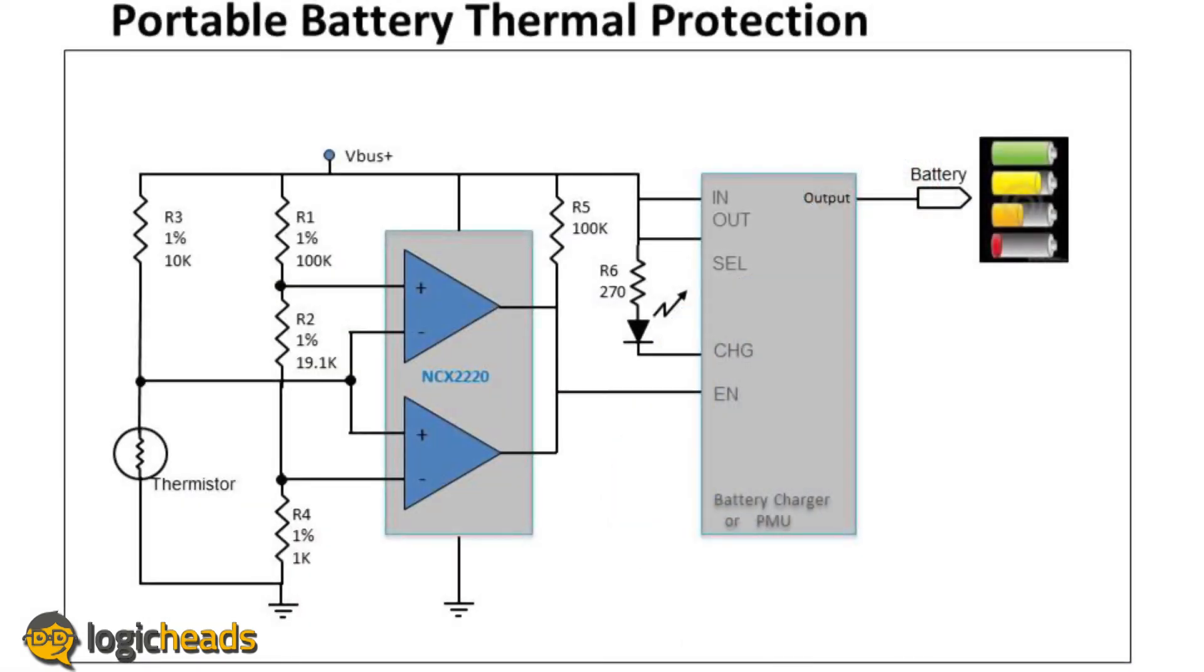Here's a circuit that has two comparators in it. This is used to set the upper and lower temperature limits on a rechargeable battery. One comparator sets the minimum temperature where you can safely charge the battery. The other, with a temperature sensor right on the battery itself, lets you know if the battery is getting dangerously hot and if you should stop charging it.